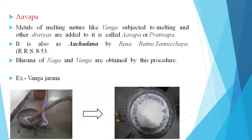A corresponding shloka from Rasaradhana Samucheya: 'Dhrute dravyantara kshepo loha dehi kriyate hi yaha, sa avapaha prativapaha tat eva achadhanam.' Here, one more word is used — Achadanakriya. The reason it is named Achadana is that once the powder is added to the molten metal, it covers the molten metal and forms a layer on its surface.